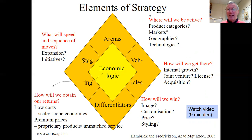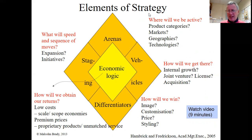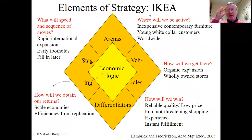Where to play and how to win are the two main questions. 'Vehicles' covers how you get there — internal organic growth, joint ventures, licensing, franchising, or acquiring other companies. 'Staging' — the speed and sequence of moves in terms of expansion, new initiatives, and new projects — is very much your strategy. Vehicles and staging are not really part of the business model; they're more strategic in how you make your business model successful.